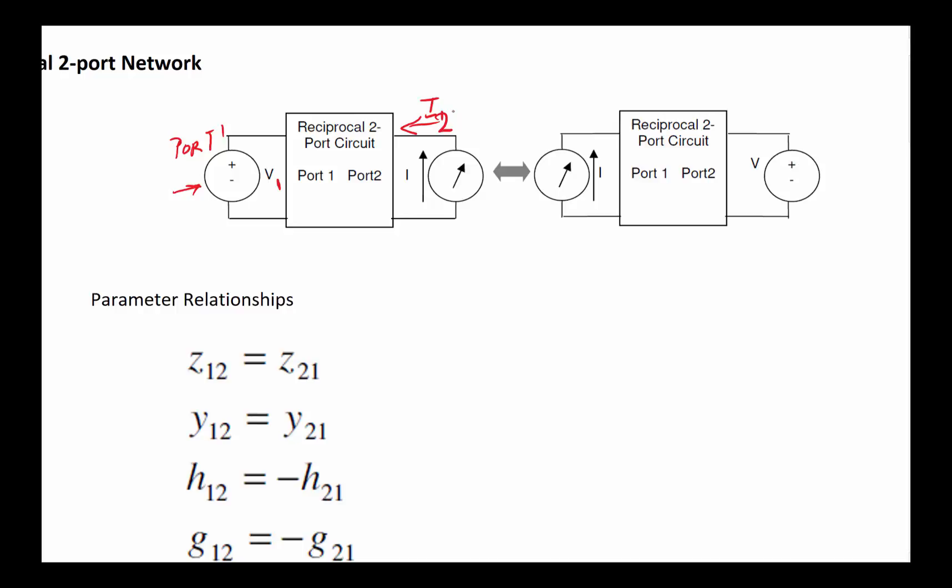So what it's basically saying is that the ratio of V1 over I2 would be exactly the same as the ratio of V2 over I1. What does that mean in terms of our parameters? In the Z parameter that basically means that Z12 is equal to Z21, and if that is true then the inverse is also true, which means for Y this is true.